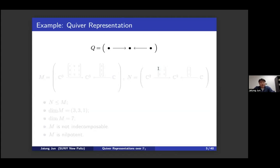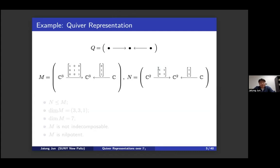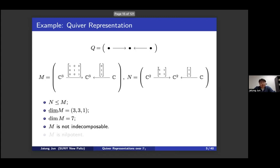Here's a quick visualization. For a quiver with three vertices and two arrows, consider representation M and its sub-representation N. The dimension vector is (3, 3, 1), and the total dimension is seven. It is not indecomposable — it can be written as a direct sum of N and a one-dimensional sub-representation — and it is nilpotent. I mention this because we'll reinterpret it in terms of F1 representations.